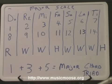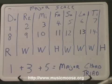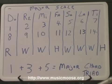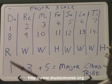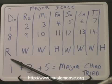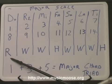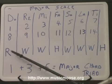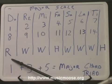Now that we know that, we can construct any major scale that we like. We can create any major scale from the 12 notes that we have to work with. We're going to start with G, because the banjo's tuned in G. If we're going to work with G, we're going to call that our root. We're going to create a G major scale.